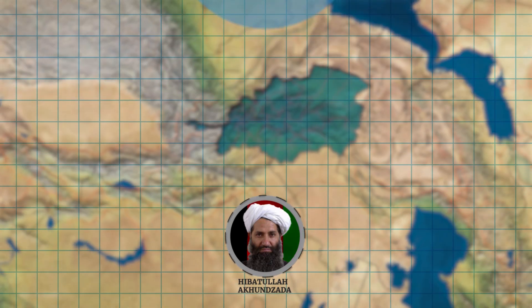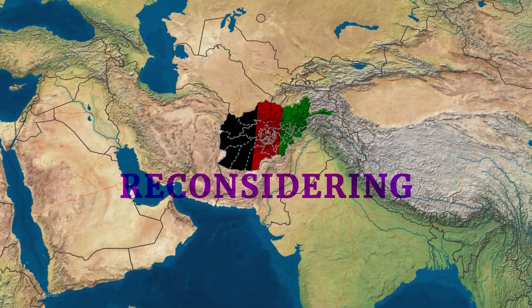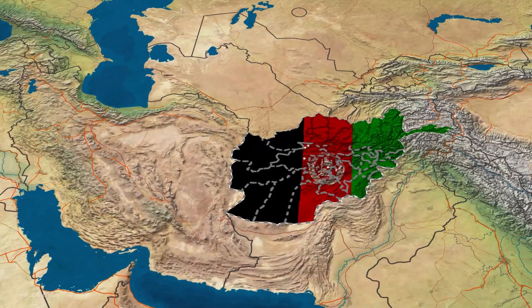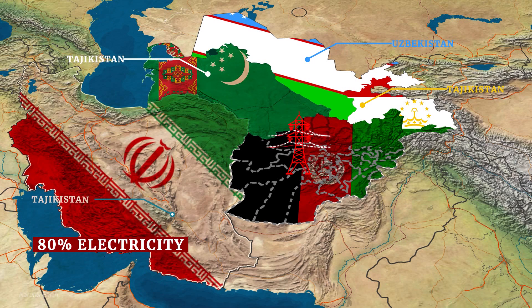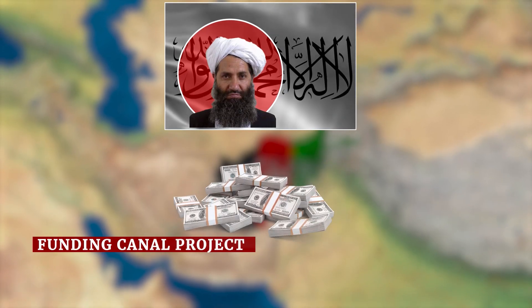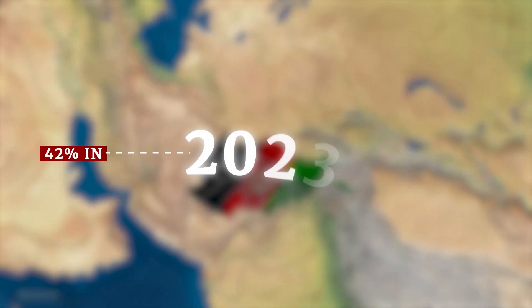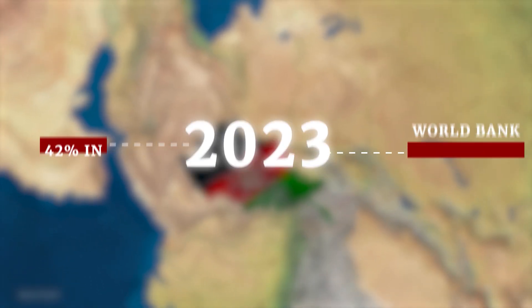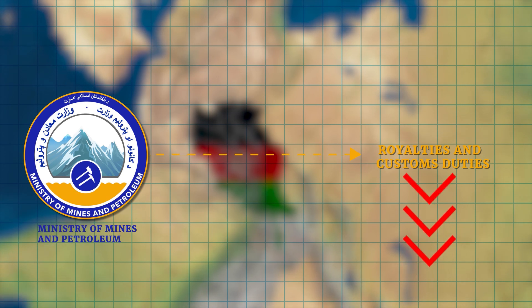Should the Taliban engage in negotiations in bad faith, the Central Asian republics have several options, including reconsidering the sale of electricity to Afghanistan, which imports 80% of its electricity from Uzbekistan, Turkmenistan, Tajikistan, and Iran. The Taliban is reportedly funding the canal project through coal sales to Pakistan, but coal prices are expected to decline by 42% in 2023 according to the World Bank. Additionally, Afghanistan's Ministry of Mines and Petroleum recently announced reduced royalties and customs duties for coal, which may impact project financing negatively.